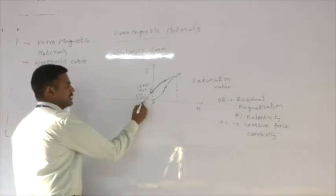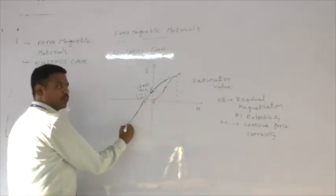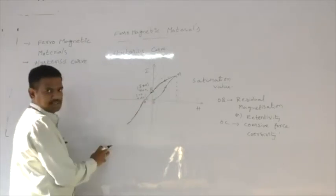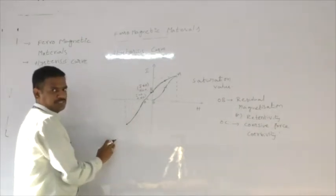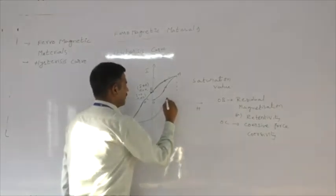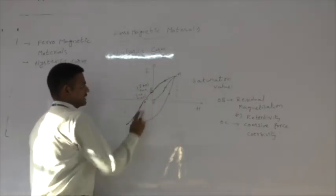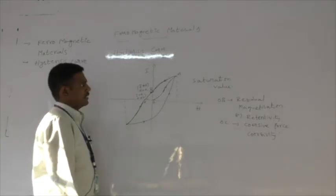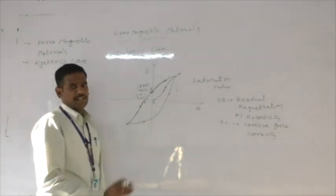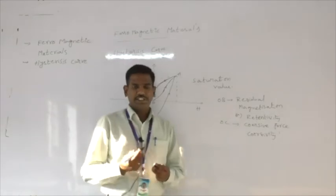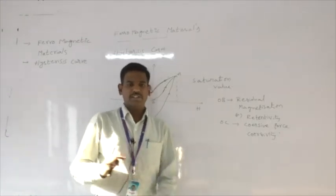If we continue increasing the magnetic field intensity in the opposite direction, the intensity of magnetization again reaches a maximum value in the opposite direction, giving negative saturation. If we then increase the positive field intensity again, it follows another different loop back. This complete closed loop is called the hysteresis curve, where magnetization always lags behind the field intensity.